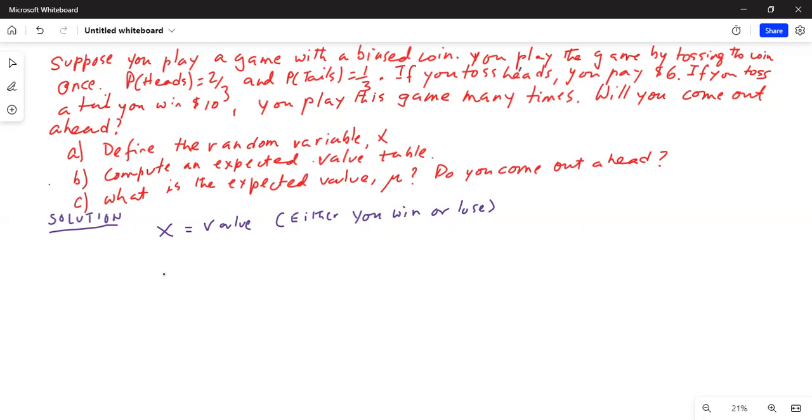So let's make a table, expected value table. That's your part B. In the expected value table you have the value of X, the corresponding value of probability, and then you have X times P(X).